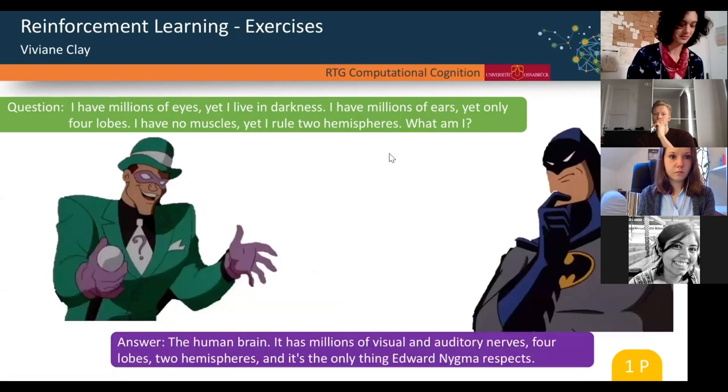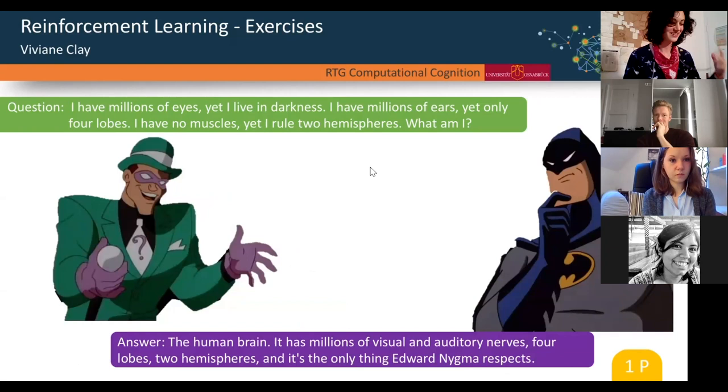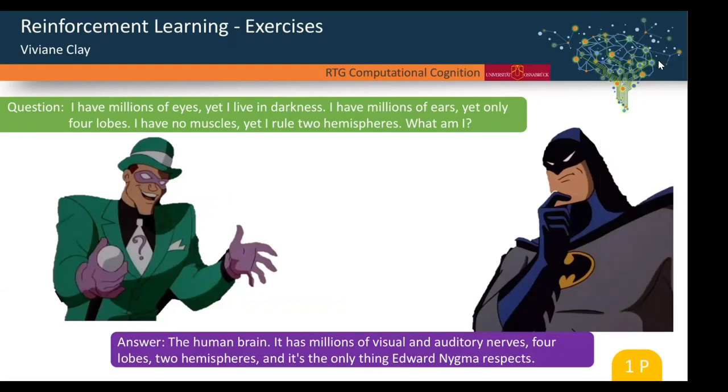Now I'm just going to give you the answer. The human brain - it has millions of visual and auditory nerves, four lobes, two hemispheres, and it's the only thing Edward Nygma respects. It's just a little joke start question. Once you get the answer, one of you from the team moves your token one step forward. Since this was just a test, everyone can move their token one step forward on the game board. But for now let's just get started with the content.